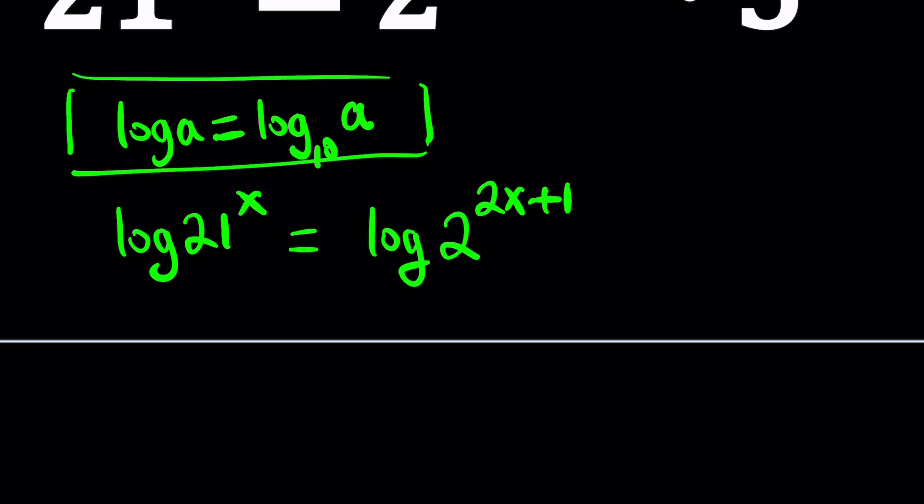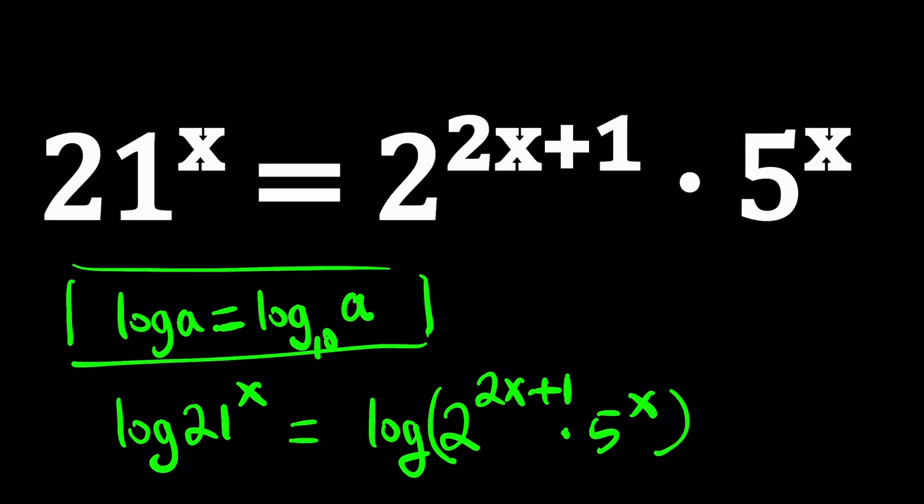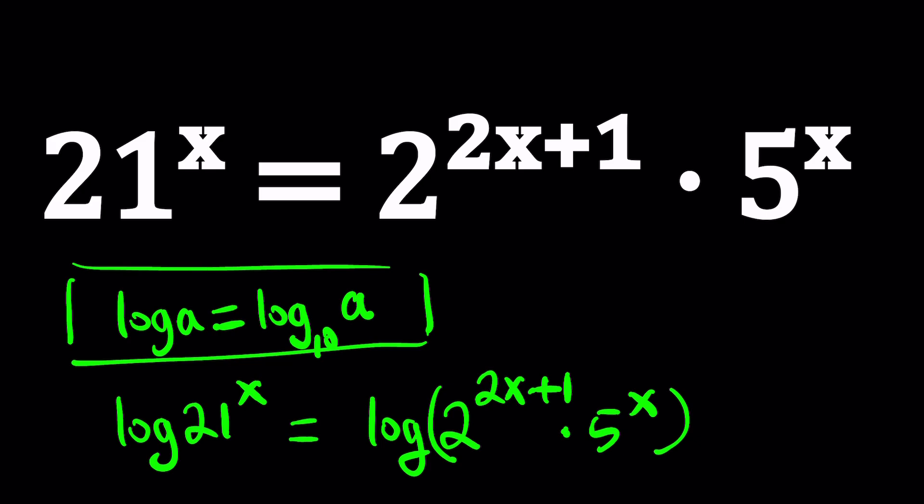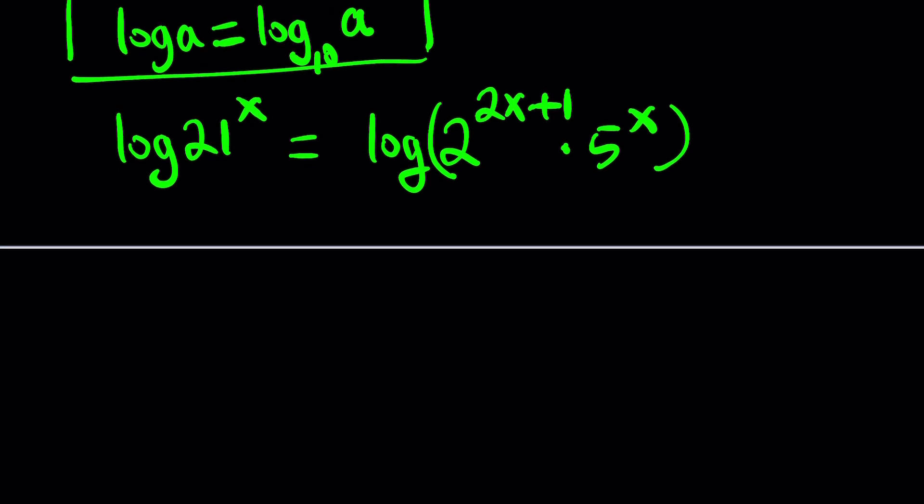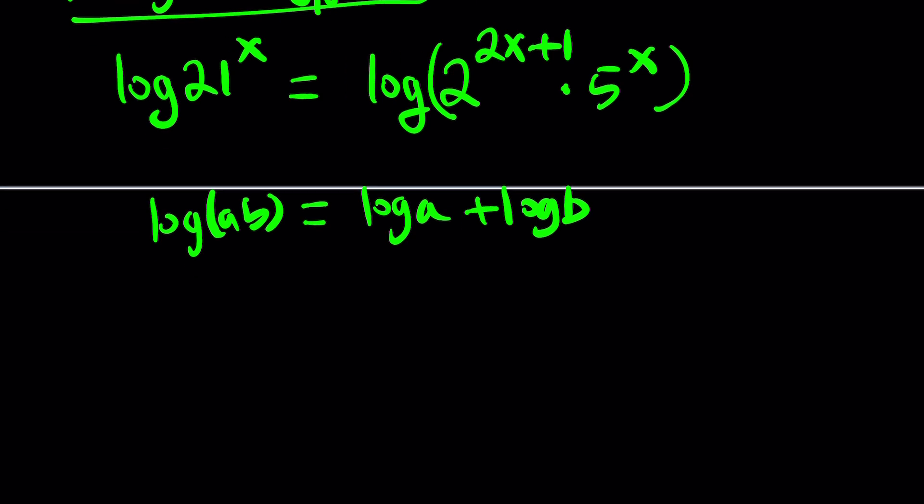So let's go ahead and log both sides and see what happens. It doesn't necessarily mean that this is going to work, but it's just an attempt. Notice that on the right-hand side, we have a product. So you have to log the product. And what happens if you log a product? Log AB is equal to log A plus log B. Properties of logarithms.